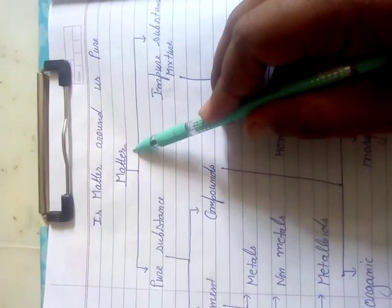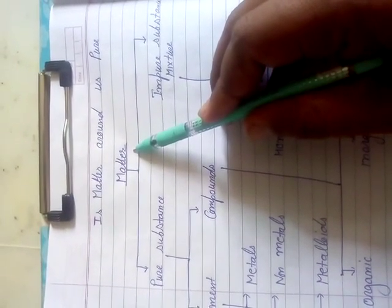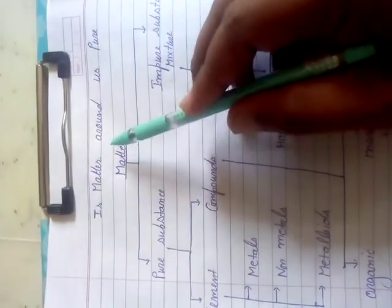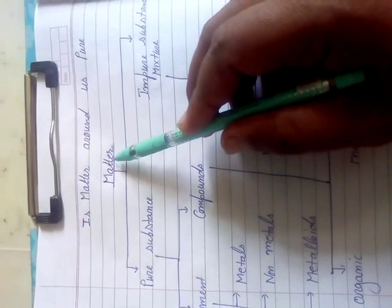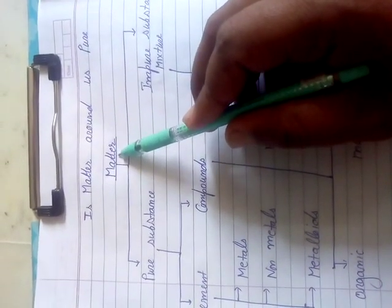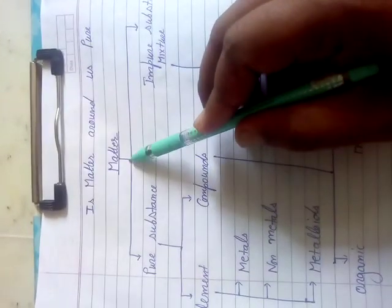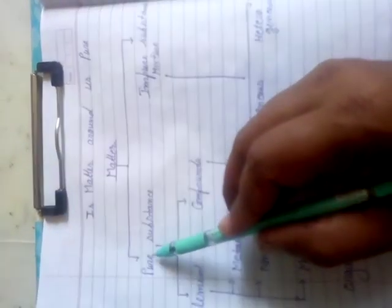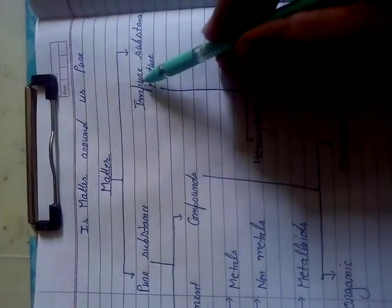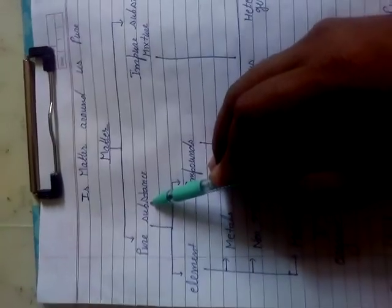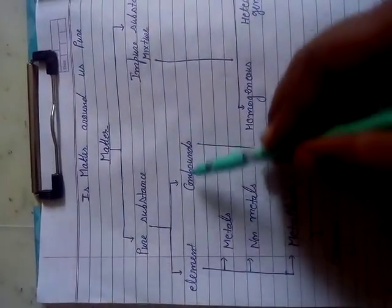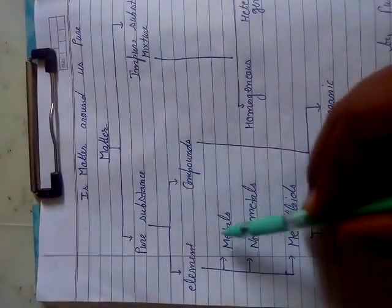Mostly things that we see in our surroundings are impure. We have to start this chapter with the classification of matter — that is chemical classification. Matter is divided into two parts: one is the pure substance and the other is the impure substances. Pure substance is divided into two parts: elements and compounds.